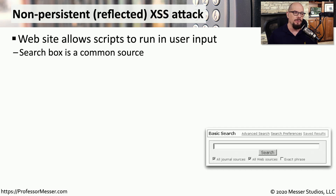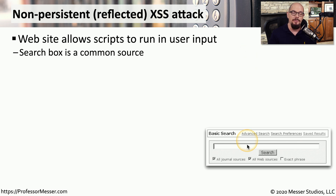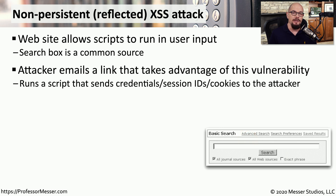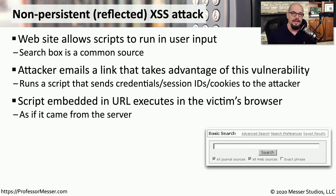One type of cross-site scripting vulnerability is the non-persistent, or what we sometimes refer to as a reflected cross-site scripting attack. This is found on a website that would allow someone to run scripts within the user input fields on that device — this might be in a search field or some other input field on the web page. To take advantage of this attack, the attacker needs the victim to click a very specific kind of link, which is very often sent to the victim through an email, encouraging them to click that link to start the reflective cross-site scripting attack.